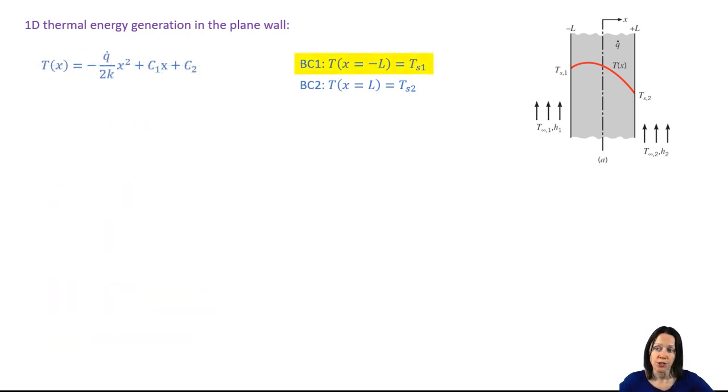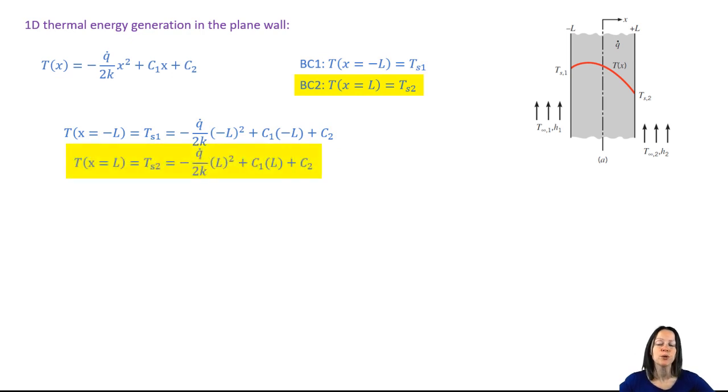We apply boundary condition number one and get an equation. And we apply boundary condition number two and get another equation. We have two equations and two unknowns, so we can solve these simultaneously.